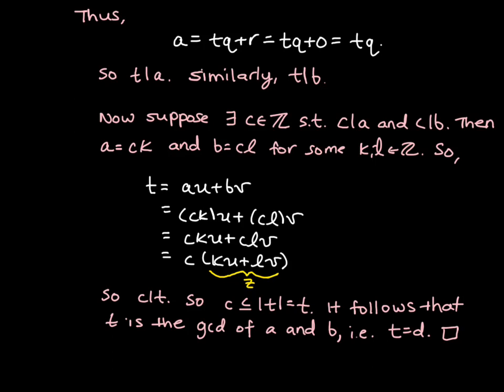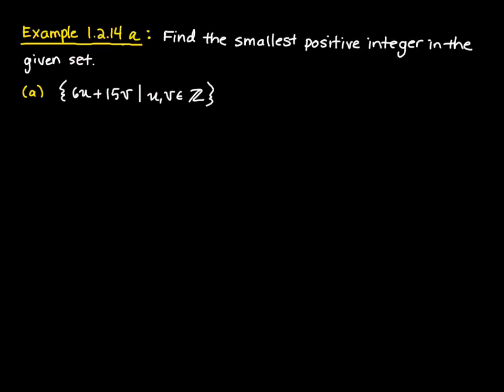In the next slide, let's talk about how we could use this theorem to illustrate an example. We're given the set of all linear combinations of 6 and 15, and we're trying to find the smallest positive integer in this set. From Theorem 1.1.2, we set out to find the smallest element — what we called t — and showed that it was actually the greatest common divisor. So here all we need to do is find the GCD of 6 and 15, and that will be the least positive element. The GCD of 6 and 15 is 3.